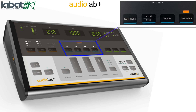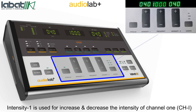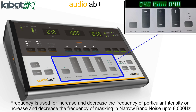Patient response indicator is used to get indication from the patient via a response switch. Intensity 1 is used to increase or decrease the intensity of channel 1. Frequency is used to increase or decrease the frequency at a particular intensity.